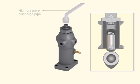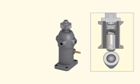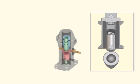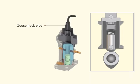Disconnect the high pressure discharge pipe. Remove the delivery valve. Fit a gooseneck pipe to the pump discharge.